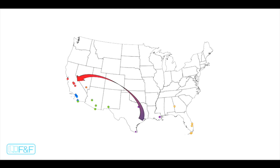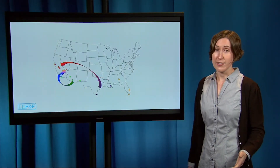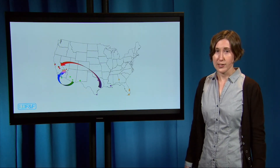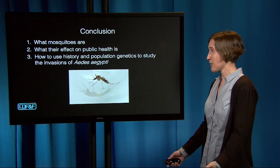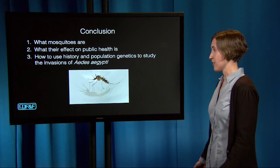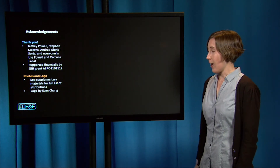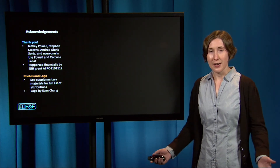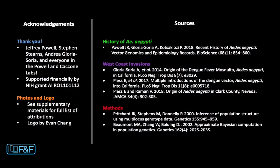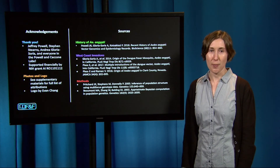In conclusion, we found at least two invasions into California followed by the invasion into Las Vegas. We also found evidence that mosquitoes are able to survive the winter in Northern California despite some occasional freezing temperatures. To summarize, we've gone over what mosquitoes are, what their effect on public health is, and how to use history and population genetics to study the invasions of Aedes aegypti. Thank you to my advisor, my lab mates, and everyone else who helped with this research. I've provided some sources if you want to learn more, and feel free to be in touch.